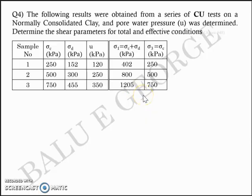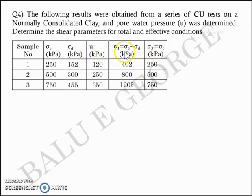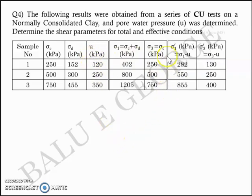To find the effective shear strength parameters, you are given the pore pressure U. Sigma 1 dash and sigma 3 dash (effective stresses) are determined by subtracting U from sigma 1 and sigma 3. For sample 1: sigma 1 dash = 402 minus 120, and sigma 3 dash = 250 minus 120. So sigma 1 dash = 282 and sigma 3 dash = 130.